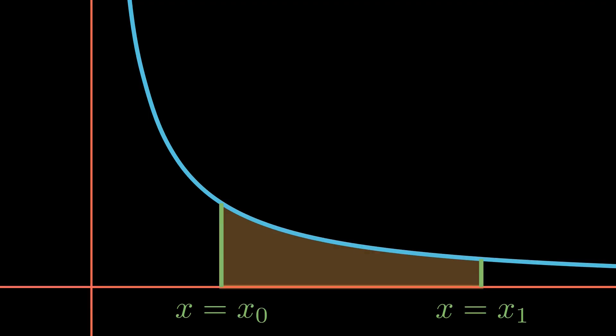This area can be calculated as the integral of 1 over x from the bounds x0 to x1. The antiderivative of 1 over x is the natural log of x. We can then evaluate this at the limits of integration, giving the natural log of x1 minus the natural log of x0.